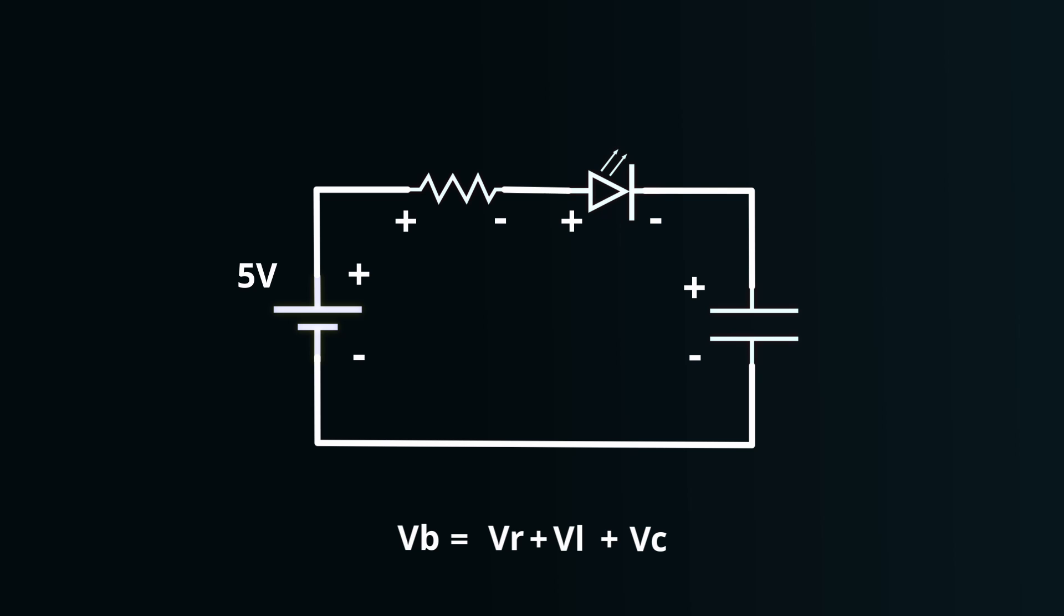Now, there's an important observation to be made. Components like batteries or voltage sources impart energy to the charge, while other components like resistors, capacitors, and LEDs deplete that energy. To simplify our circuit analysis and keep track of these energy dynamics, there's a useful convention that we can employ.